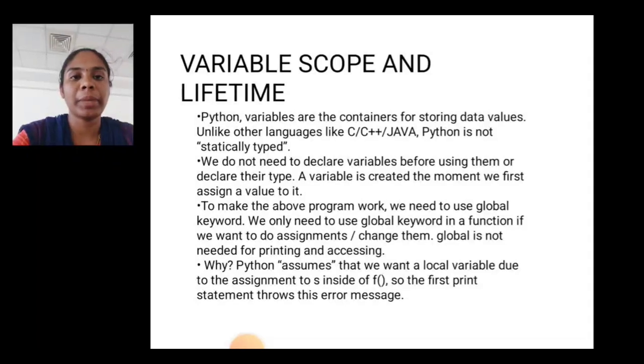Variable scope and lifetime. Python variables are containers for storing data values. Unlike other languages like C, C++, Java, Python is not statistically typed. We do not need to declare any variable before using them or declare their type. A variable is created the moment we first assign a value to it. To make the above program work, we need to use global keyword. We only need to use global keyword in a function if we want to do assignment to change them. Global is not needed for printing and accessing.